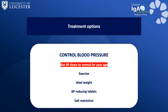Anyone who has heard me talk before will not be surprised to hear that the key strategy for treating IgA nephropathy is to control blood pressure. We can do this with drugs and with general lifestyle modification. The keys to blood pressure control are regular exercise, being an ideal weight, reducing salt in the diet, and if needed taking blood pressure-reducing tablets.